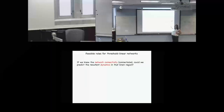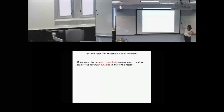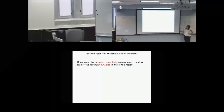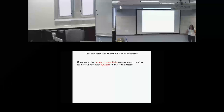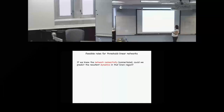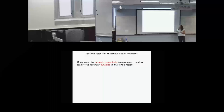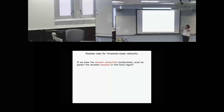Even if we knew exactly what the connectome was — the network connectivity for a particular brain region — it begs the question: could we actually predict the resultant dynamics from that? There is at least one organism now for which we do know the full connectome — C. elegans. For C. elegans, we know the connectome, but we've mapped out what the synapses are between every pair of neurons and still cannot use that to predict when we're going to get chaos or some other type of activity.